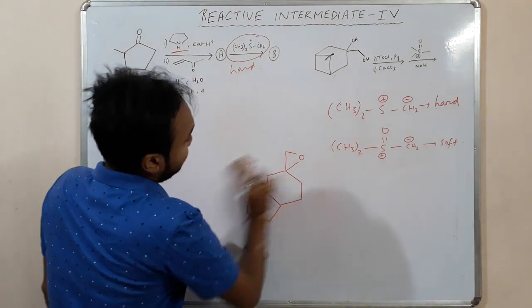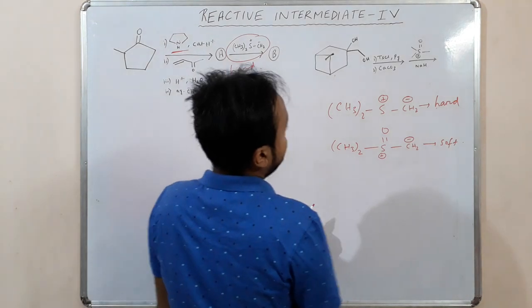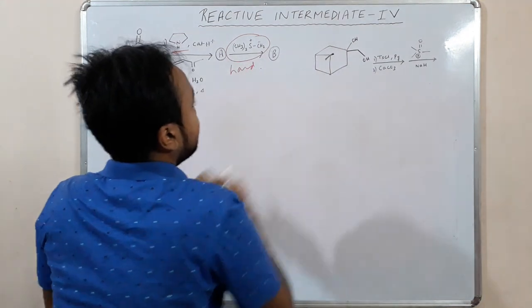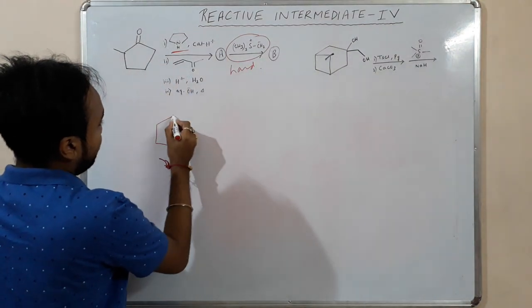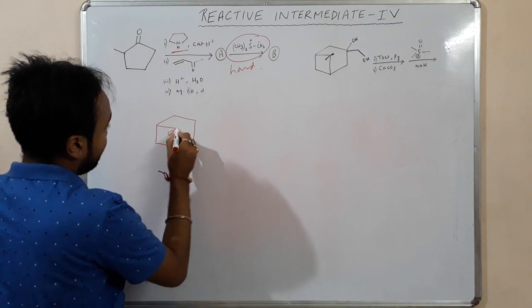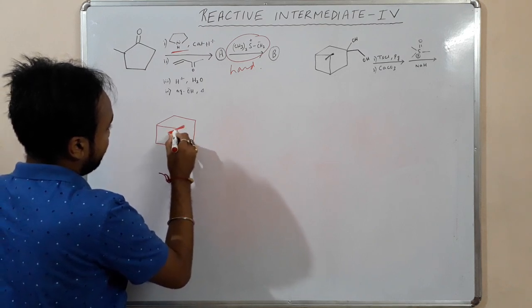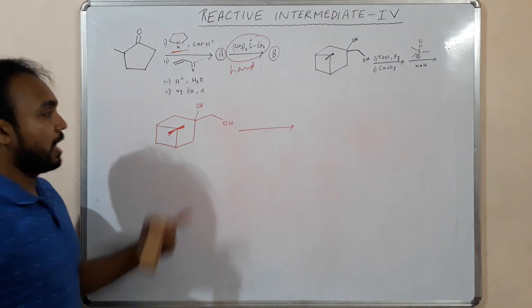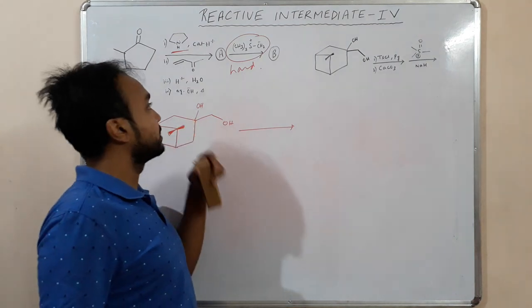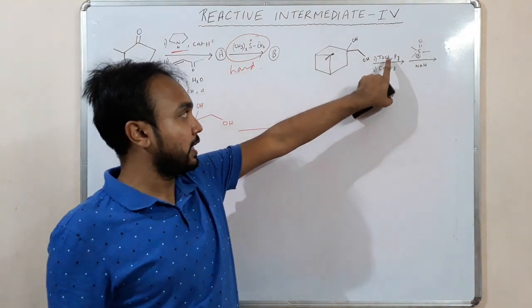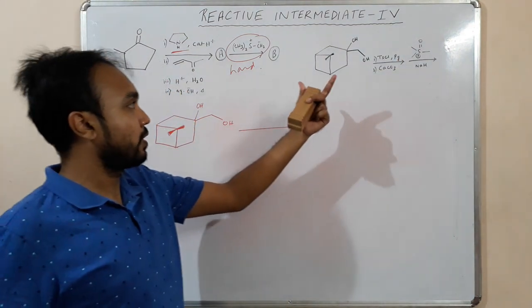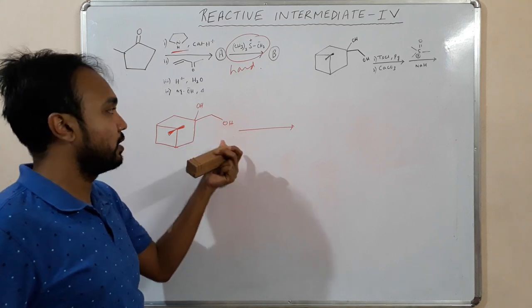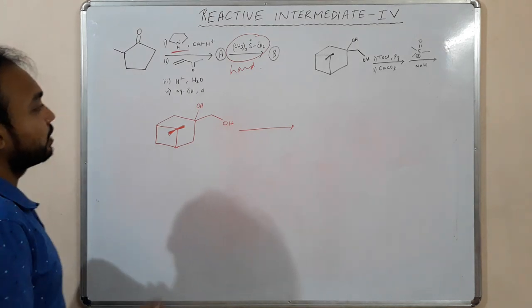Let us move to the second example. We have a compound with methyl groups, and there are two types of OH groups — one is a primary OH group and one is a tertiary OH group. Tosyl chloride in the presence of pyridine always favors the less hindered OH group; it will prefer a primary alcohol rather than a secondary.